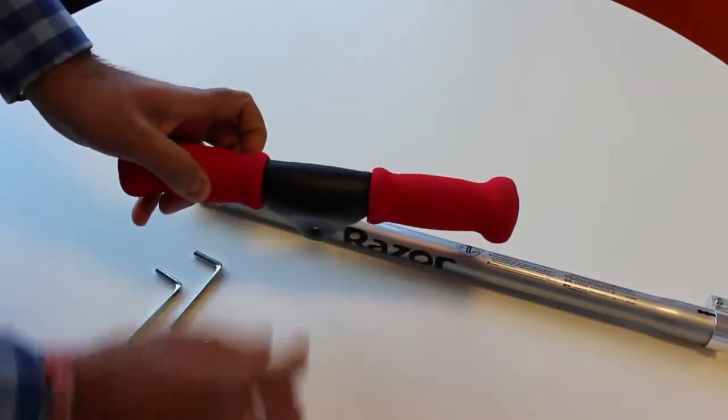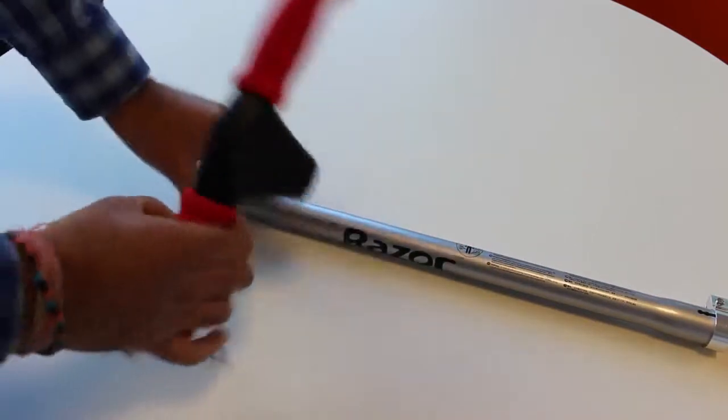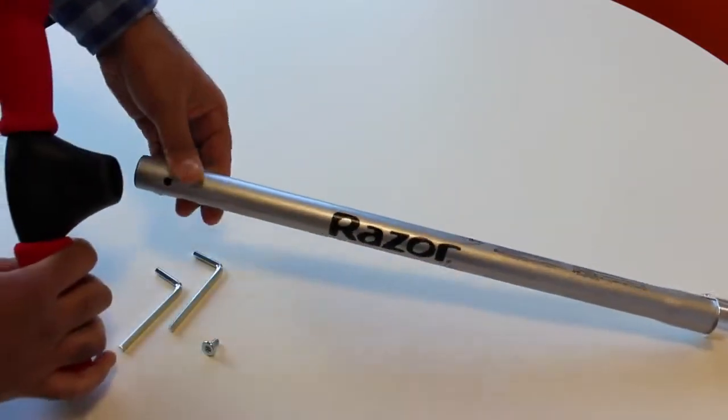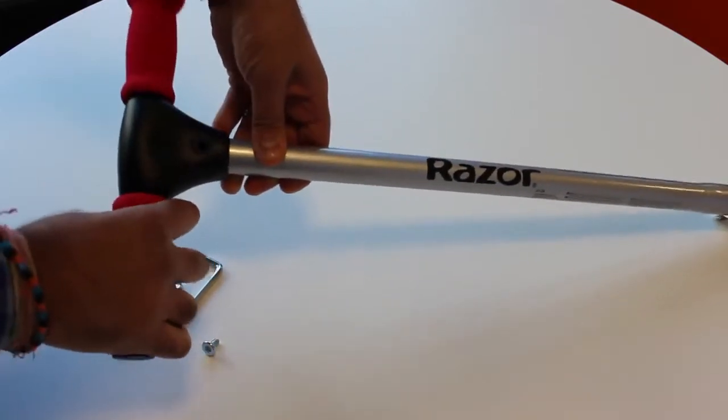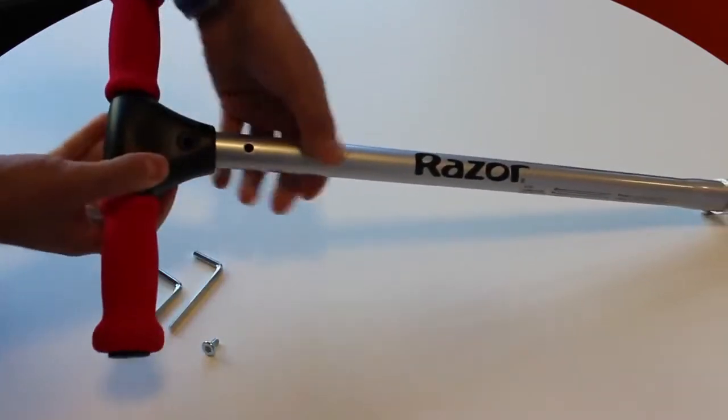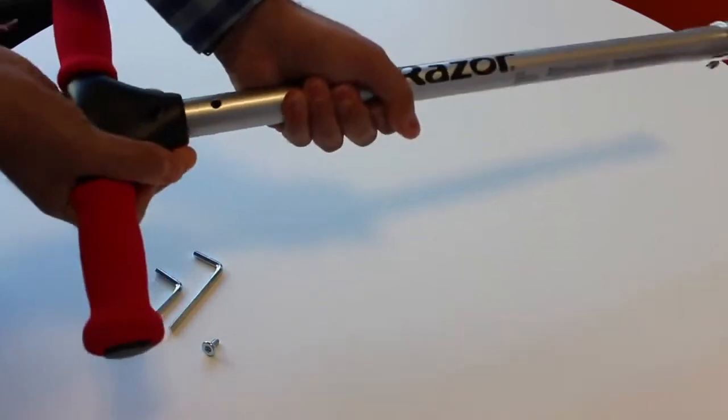Now the handlebar you see curves out at the front that's the point that has to be front facing. Front of the handlebar is where the Razor logo is so you just want to slide the handlebars on to make the holes meet there.